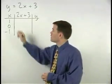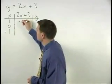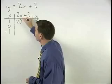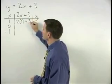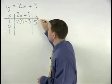So plugging a 1 into the equation for x, we have 2 times 1 plus 3, or 2 plus 3, which is 5.